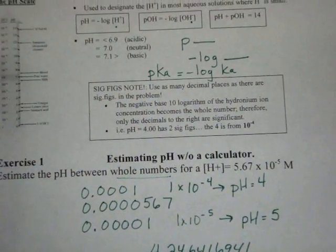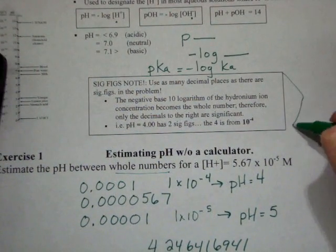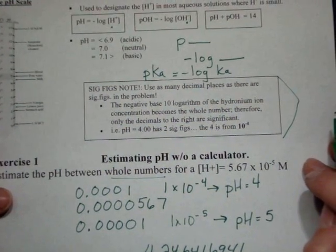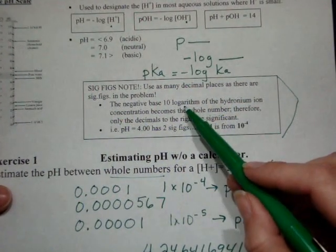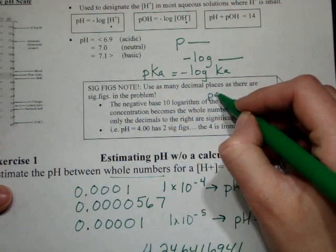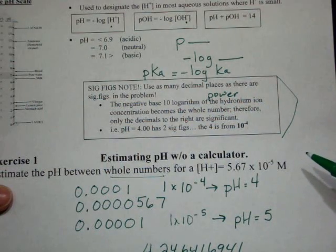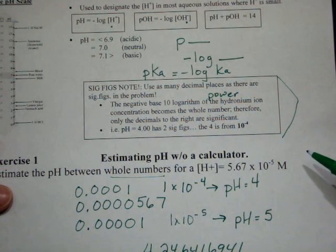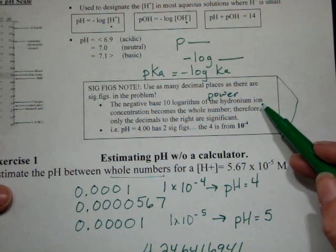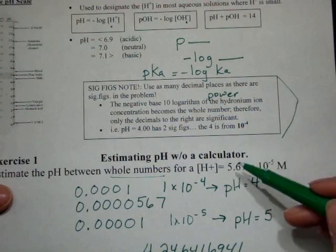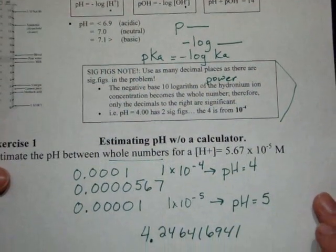So let's come back to this little significant figures note here. Use as many decimal places as there are sig figs in the problem. The negative base 10 logarithm, so that basically is talking about the power, becomes the whole number. Therefore, only the decimals to the right are significant. In other words, the power does not count as a significant digit. Everything past the decimal point does.